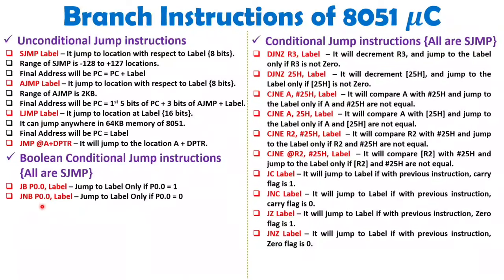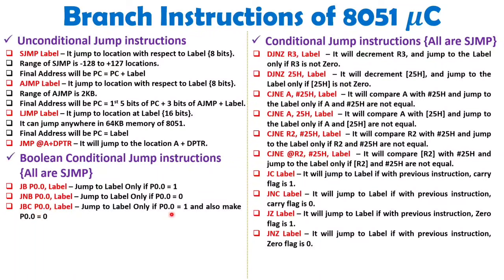Similarly, JNB means jump if not bit — if P0.0 equals 0, then only we jump to the label. One more interesting instruction is JBC, which means jump if bit and clear. First you check P0.0, and if it equals 1, you jump to the label and also clear that bit to 0. If P0.0 is already 0, you don't jump and you don't need to clear it either since it is already clear.